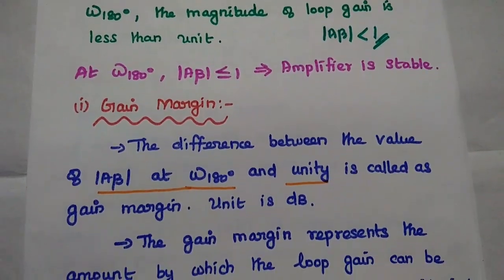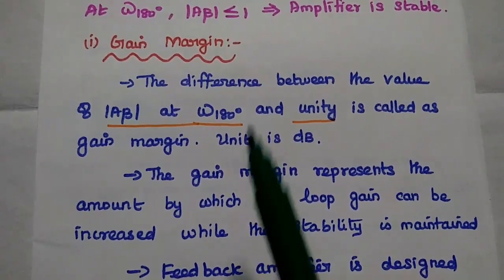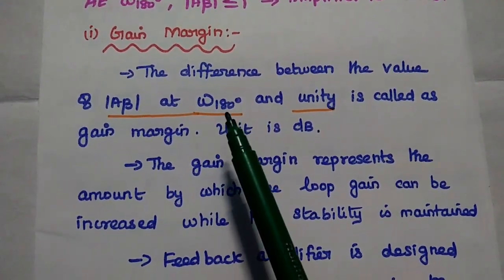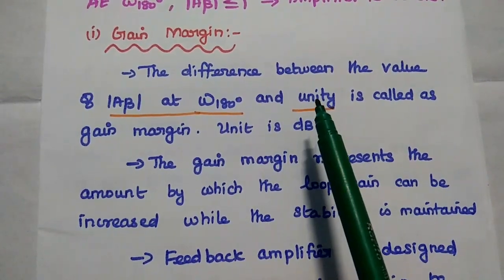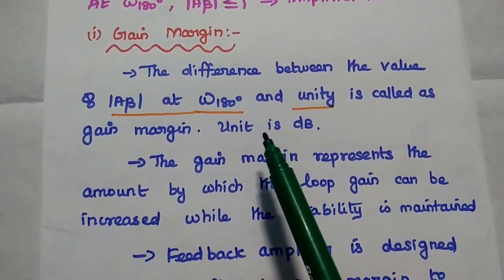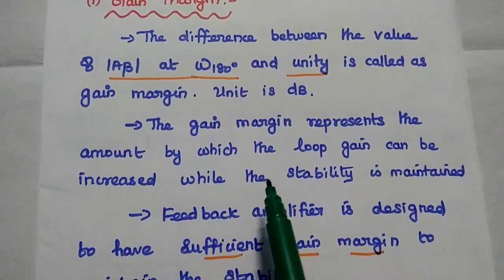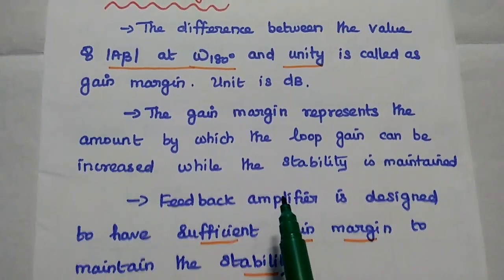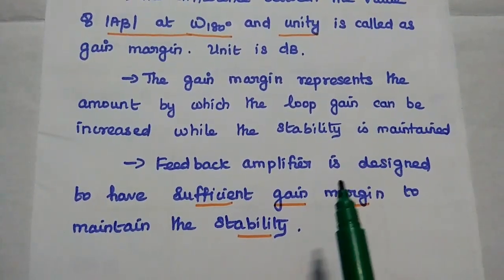In the Bode plot method, there are two types of margins used: gain margin and phase margin. Gain margin is the difference between the value of |A·beta| at unity and the value of |A·beta| at the frequency with 180-degree phase shift, expressed in dB. The gain margin represents the amount by which the A·beta value can be increased while stability is maintained, and the feedback amplifier must be designed with sufficient gain margin.